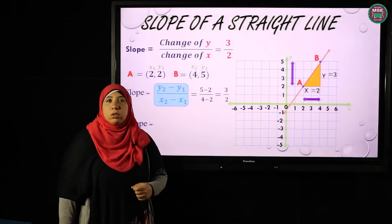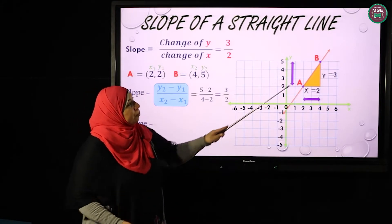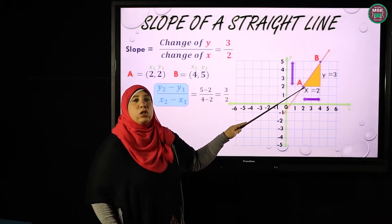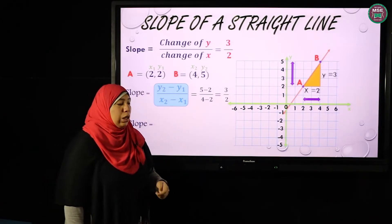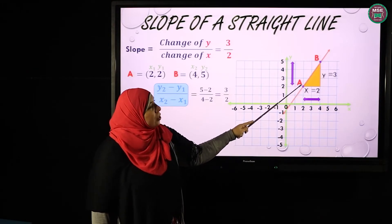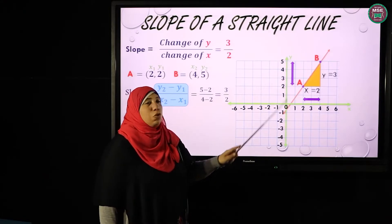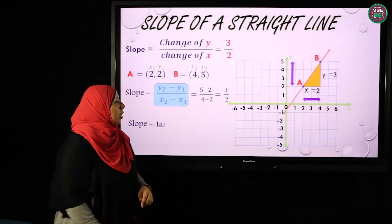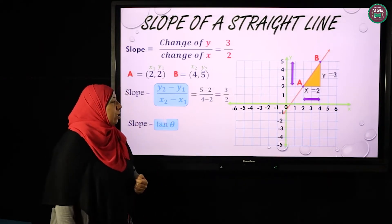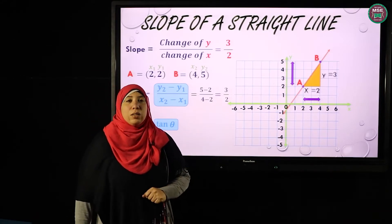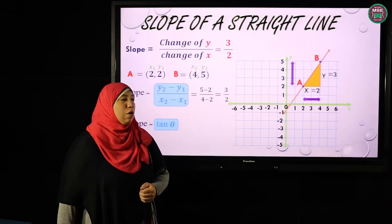I have another rule for the slope. If you notice here, the change of Y is one side and the change of X is the other side. We studied this before in trigonometry: if this angle is theta, the change of Y is the opposite side and the change of X is the adjacent side. So I can say that the slope equals tan(θ). This is another rule if you know the angle made by the line with the positive direction of the X-axis.